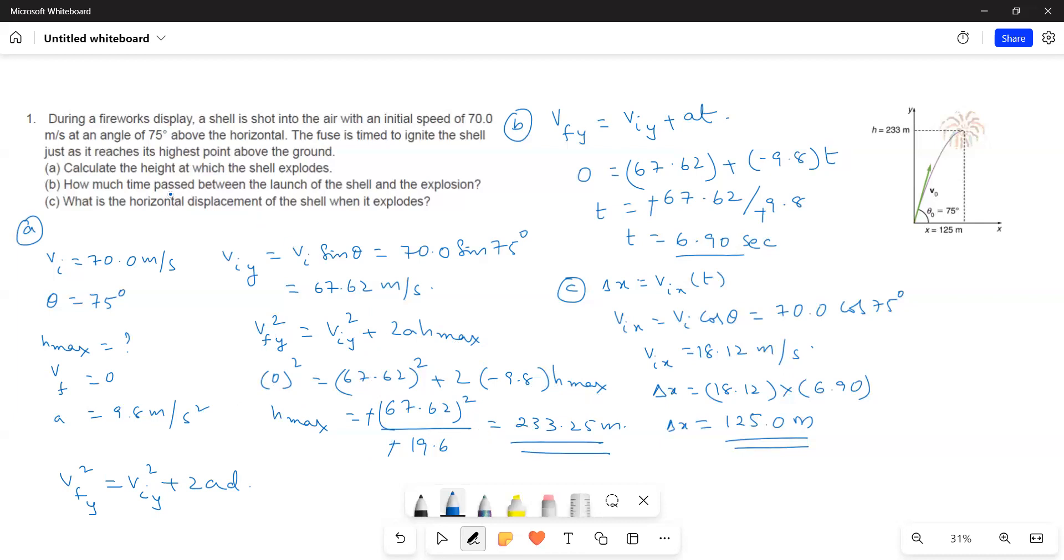Next, part B: How much time passed between the launch of the shell and the explosion? That means how much time the shell takes to reach the maximum height. So I use Vf y is equal to Vi y plus A t. At the maximum height the velocity is 0 and initial velocity along y direction I just calculated, and acceleration is known to us. Therefore t is equal to 6.9 seconds.